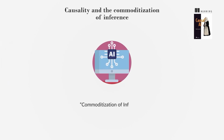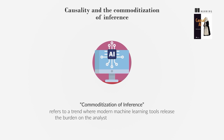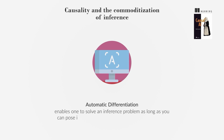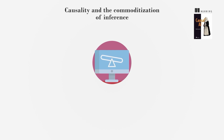The commoditization of inference refers to a trend where modern machine learning tools relieve the burden on the analyst to build expertise in inference. For example, automatic differentiation enables one to solve an inference problem as long as you can pose it as minimizing a differentiable loss function. This book leverages this trend to allow the reader to focus more on building and manipulating causal models to solve practical problems.